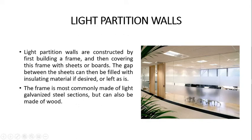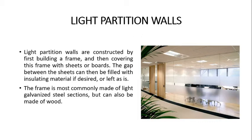To construct a light partition wall, we build a building frame first and then cover that frame with sheets or boards. The frame can be made of galvanized steel sections or timber. The gap between the two members of the frame can be filled with glass or covered with sheets and boards. We can also add insulating material in that gap if a particular condition requires insulation; otherwise, we can leave the cavity as it is.